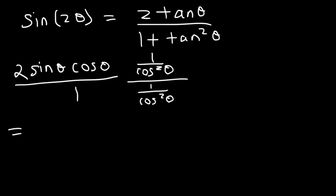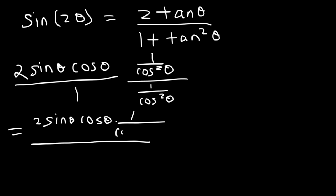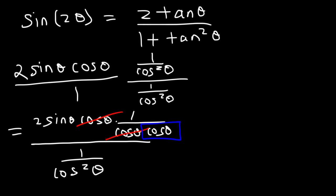So what we now have is 2sinθcosθ, and I'm going to write 1/cos²θ as 1/cosθ times 1/cosθ. On the bottom we have 1/cos²θ. One of the cosθ factors cancels, leaving sinθ in the numerator under 1/cosθ, so the numerator becomes 2sinθ/cosθ.